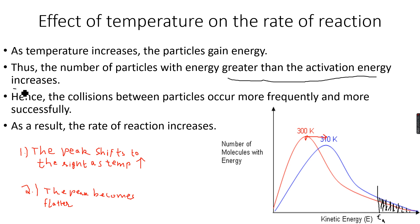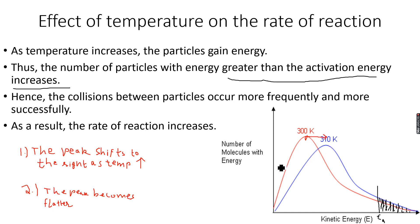The collisions are more frequent because the particles are faster, and the collisions occur more successfully because more particles collide with greater energy. So we have used this Boltzmann distribution curve to explain how an increase in temperature affects the rate of a reaction.